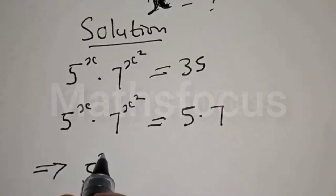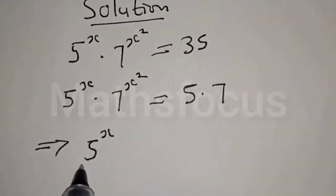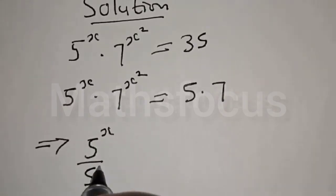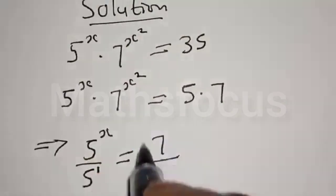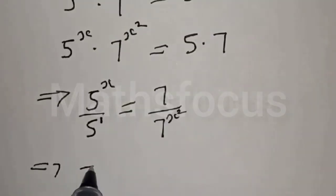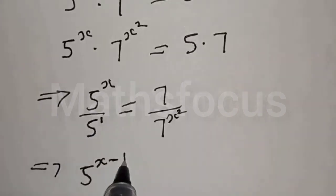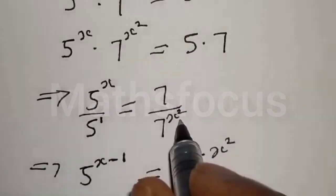We have 5 raised to power x. This is also 5 divided by 5, and 5 is simply 5 raised to power 1, equal to 7 here divided by 7 raised to power x. So we have 5 raised to power 1 minus 1, equal to 7 raised to power 1 minus x squared.